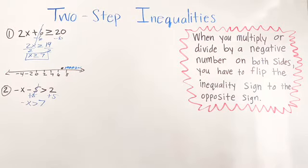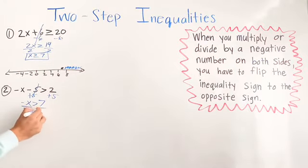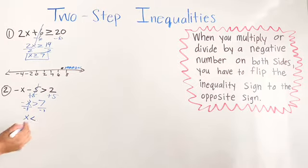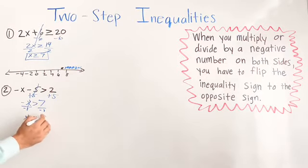Now we're going to divide because we cannot have our variable be negative. We're going to divide by negative 1 on both sides, leaving x by itself. But remember the rule: when you multiply or divide by a negative number on both sides, you have to flip the inequality sign to the opposite side. So it was greater than, and since we're flipping it, it's going to be less than. And negative 7 divided by negative 1 gives us negative 7.